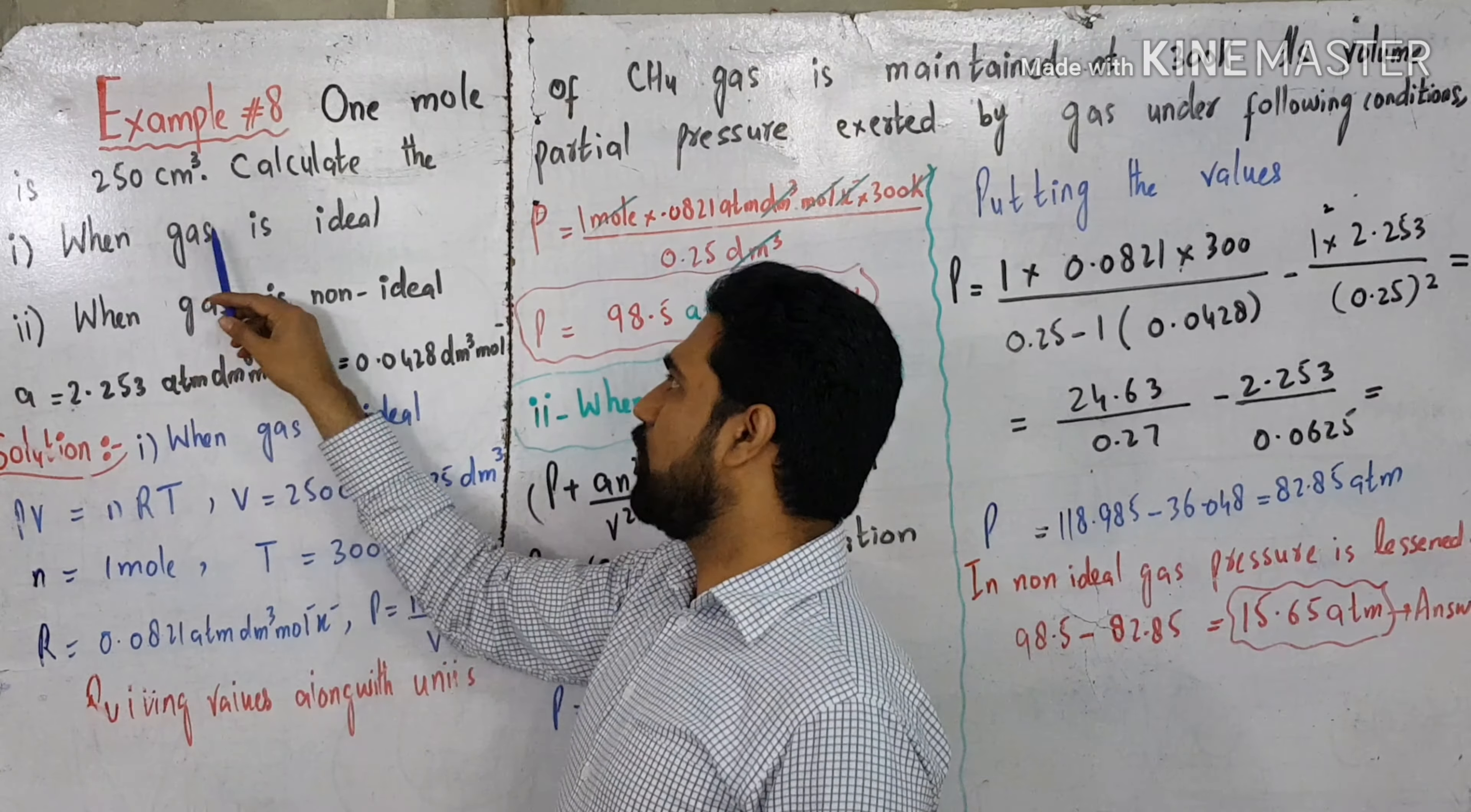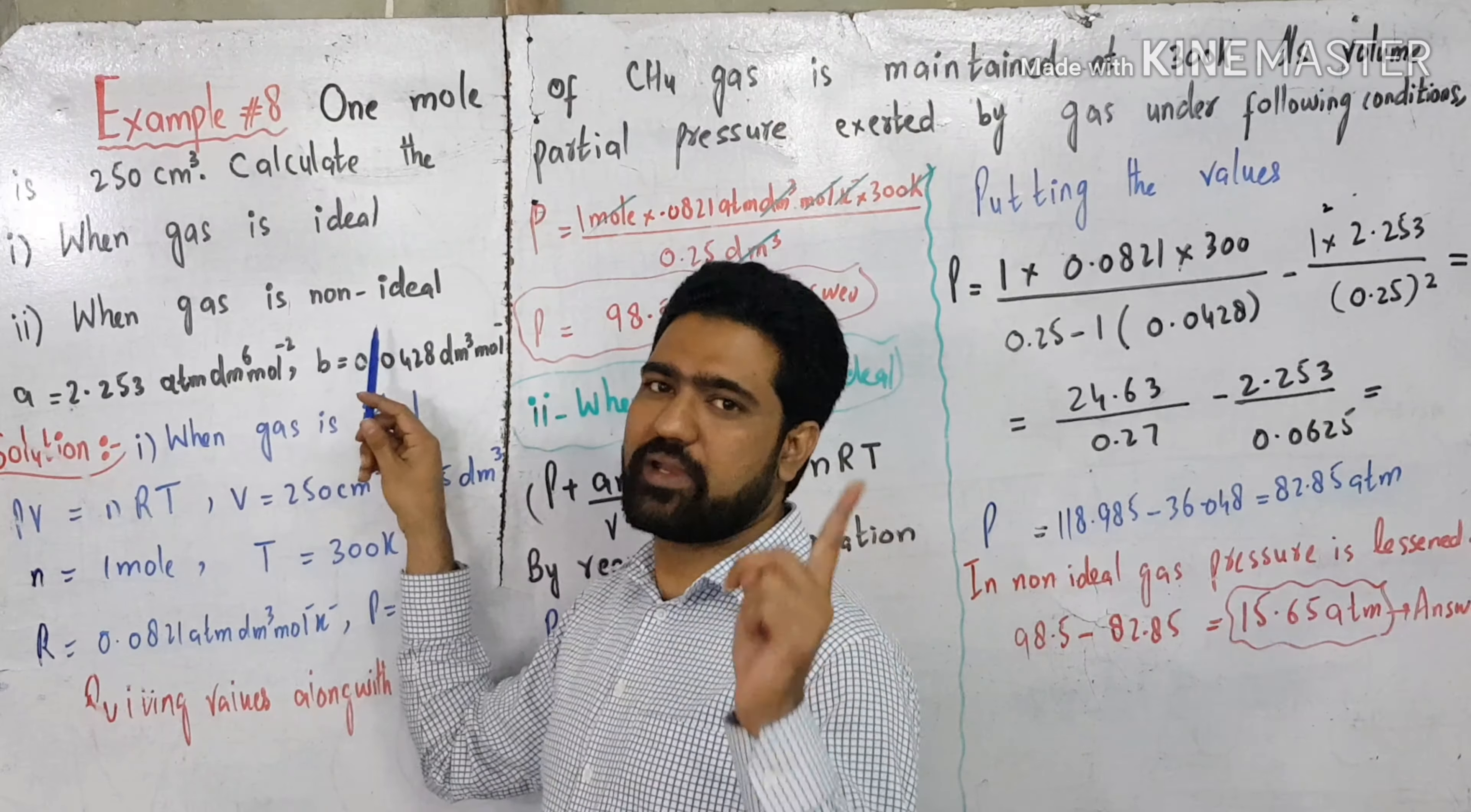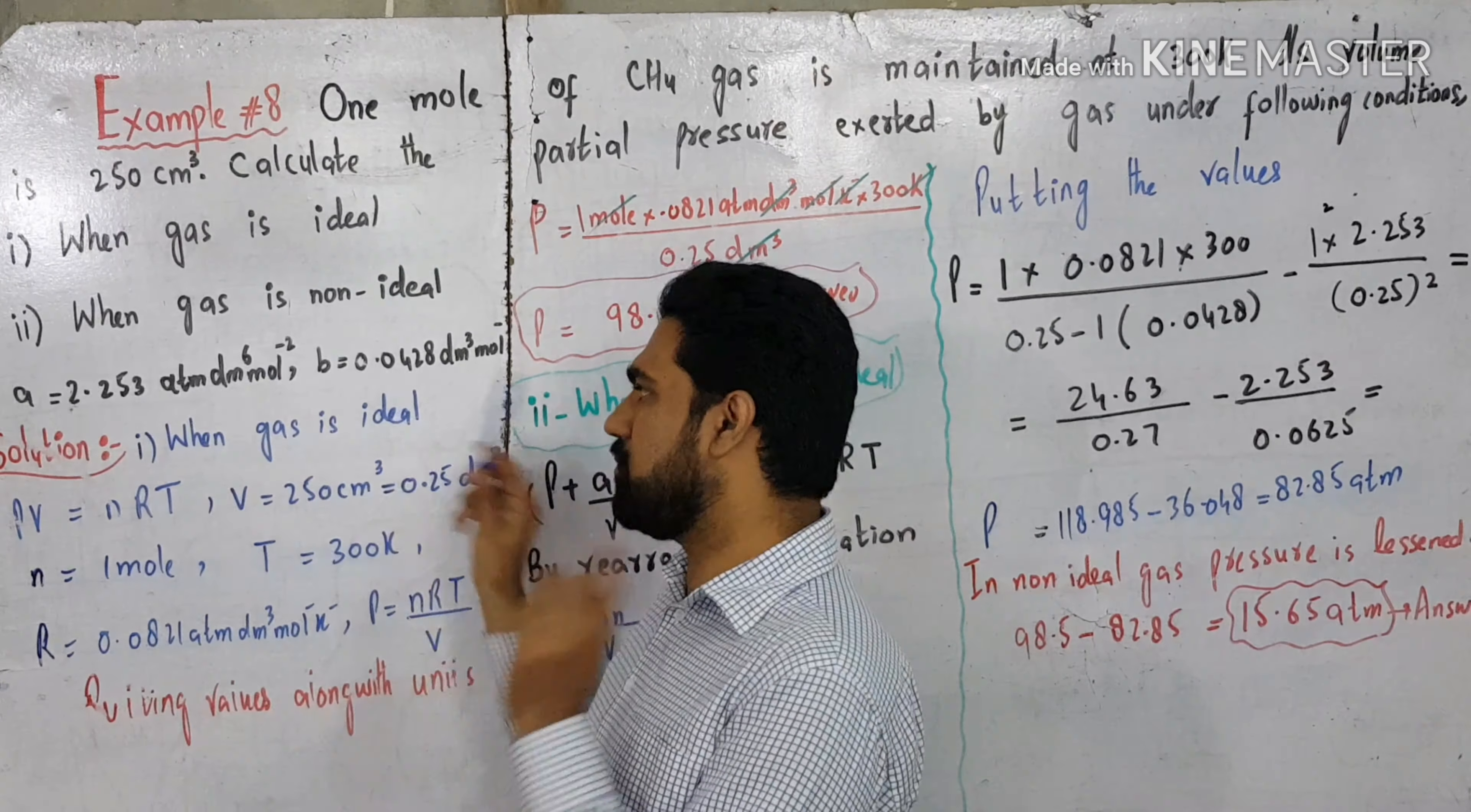Number one: when gas is ideal. Number two: when gas is non-ideal. When gas is non-ideal, then A and B are required. A and B are provided.